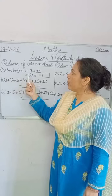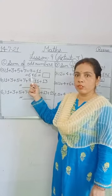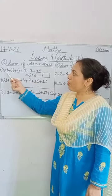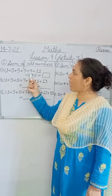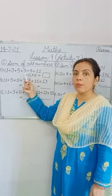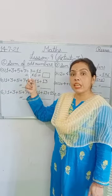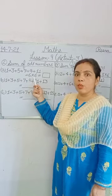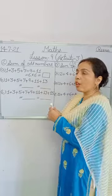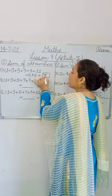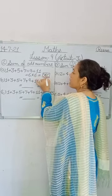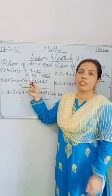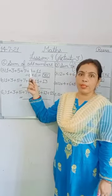Now here, you have been given a hint. How many numbers do you have? 1, 2, 3, 4, 5, 6. How many total numbers? 6 numbers. So you have 6 multiplied by 6. Now this is the short form of the addition of all odd numbers.